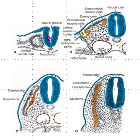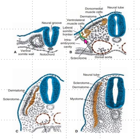The neural tube is the secondary inducer. Chemicals are liberated from it and act on the somite, and somite formation occurs. In figure B, you can see the somite is further developed and forms the dermatome, muscle cells, and sclerotome.